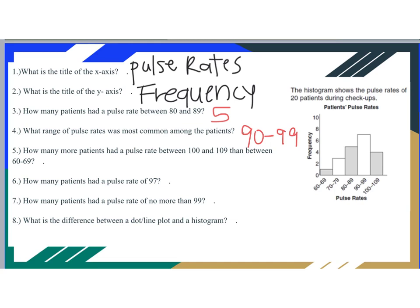How many more patients had a pulse rate between 100 and 109 than 60 to 69? For 100 to 109, that is 4 people. For 60 to 69, we had just 1 person in that range. For how many more patients, we find the difference between those two numbers — subtract 1 from 4, which gives us 3. There were 3 more patients with a rate between 100 and 109 than between 60 and 69.